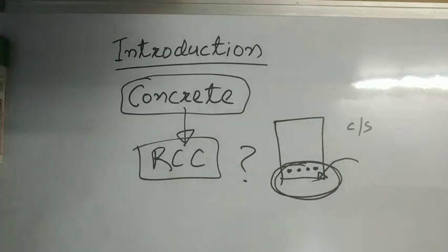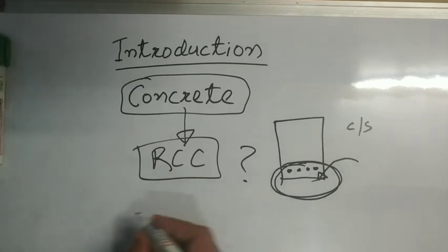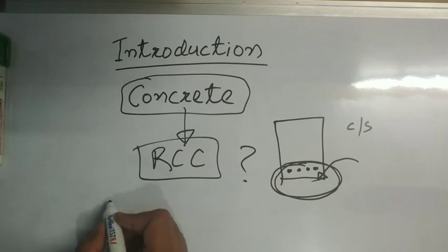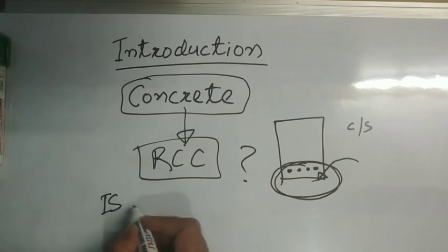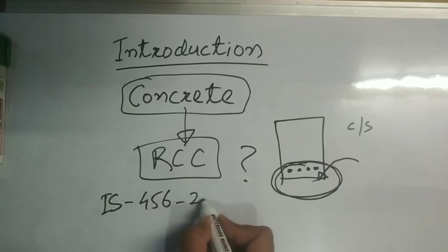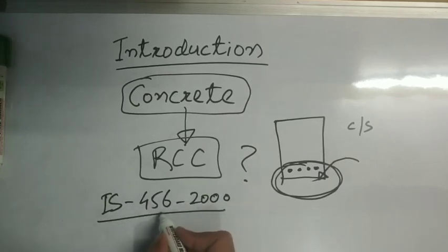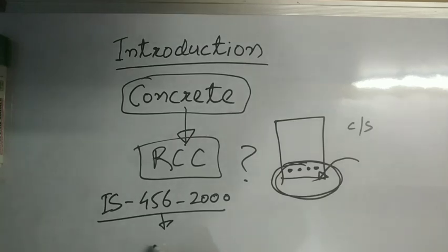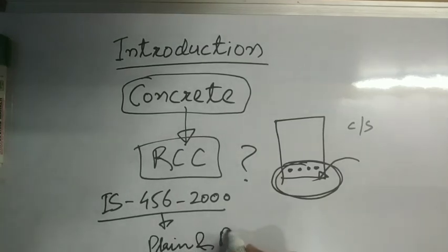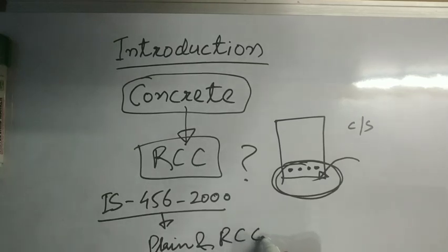Now I'll talk about the codes which are related with reinforcement design. First one and the most important is IS 456-2000. This code is regarding the plain and reinforced cement concrete code of practice.